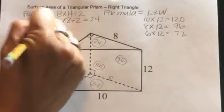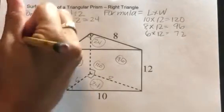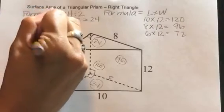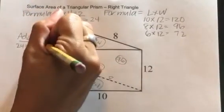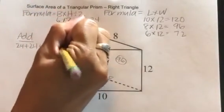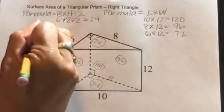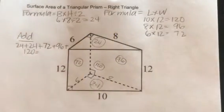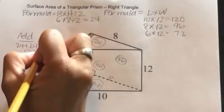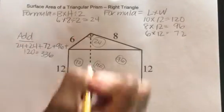The last step is to add those together. So I'm going to do 24 plus 24 plus 72 plus 96 plus 120. When I add all those numbers together, I get 336.